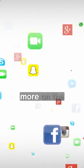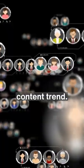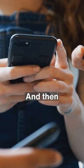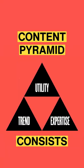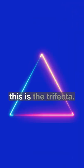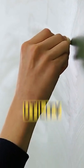I want you to focus a little bit more on the content trend — what are people searching right now — and then dovetail into that. The content pyramid consists of three things, this is the trifecta: utility, expertise, and trends. Let's get into it.